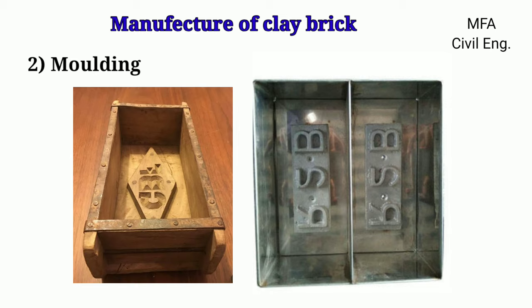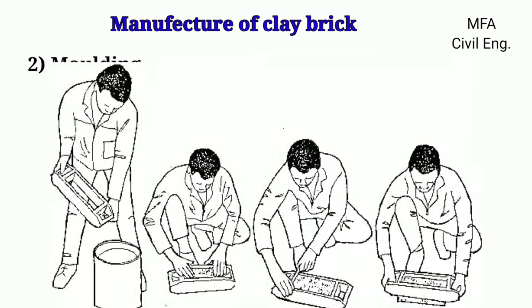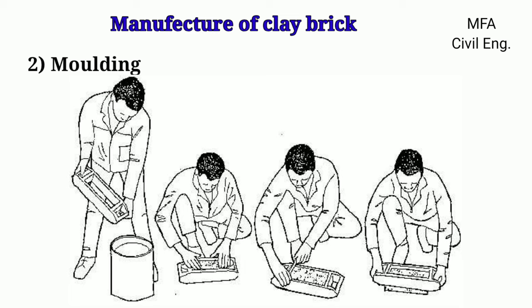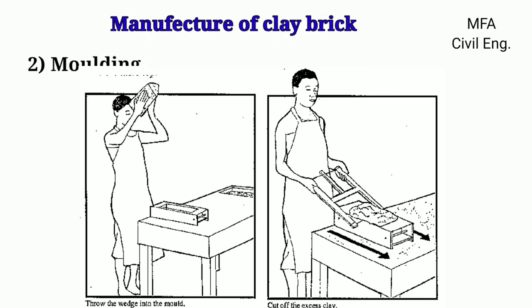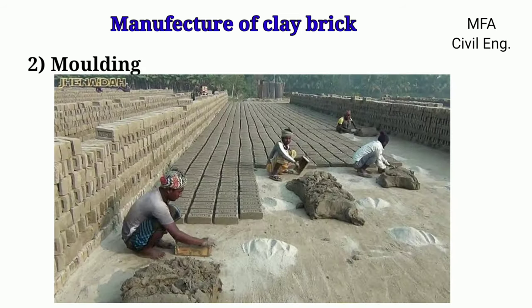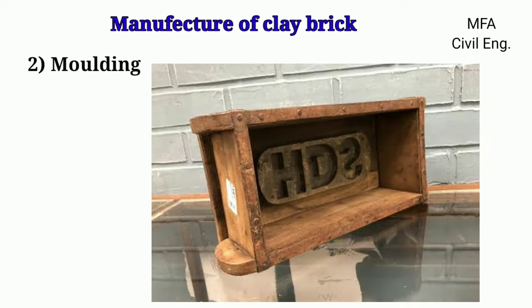For hand molding of a brick, wooden or steel molds are preferably used. The mold is either dipped in water or sand. Clay is introduced into the mold firmly, then the mold is lifted and a slight jerk is given to it, and inverted on the ground to release the molded brick. In table molding, a table is used and the molded bricks are laid on a pallet board. Hand molding is very popular in India for getting a depression called a frog on a molded brick, and the arrangement is done in the mold itself.